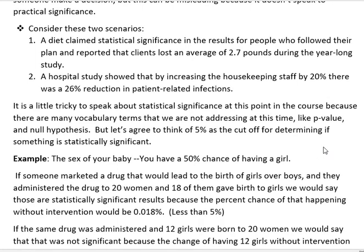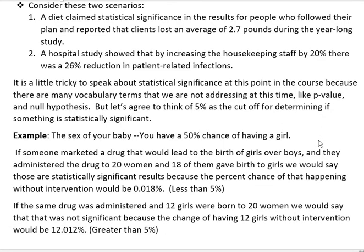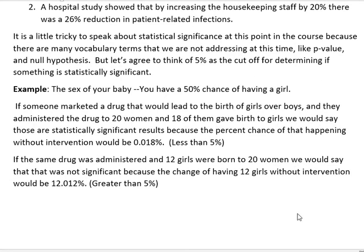It's a little tricky to speak about statistical significance at this point in the course because there are many vocabulary terms that we're not addressing at this time, like p-value and null hypothesis. But let's agree to think of 5% as the cutoff for determining if something is statistically significant. I'm going to give you an example rather than a definition at this time.